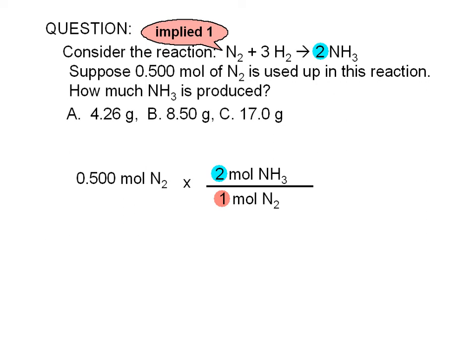The ratio of coefficients serves as a conversion factor. The answer we get here is 1.00 moles of ammonia.